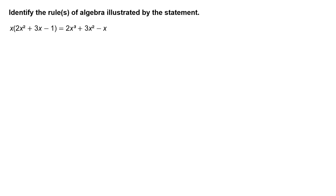Identify the rule or rules of algebra illustrated by the statement: x times the quantity 2x squared plus 3x minus 1 equals 2x cubed plus 3x squared minus x. First, write the original expression: x times the quantity 2x squared plus 3x minus 1.